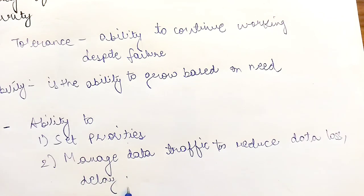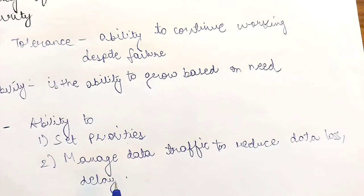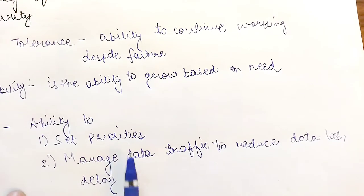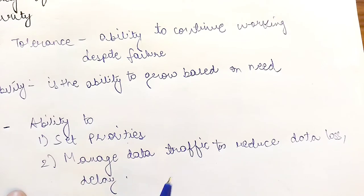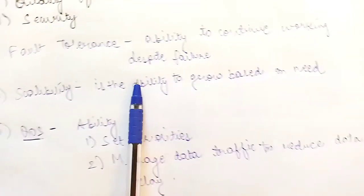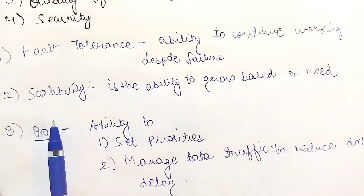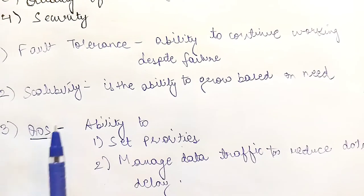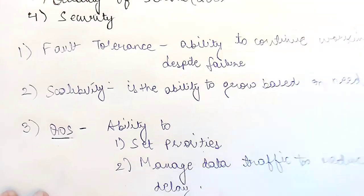Data must be sent within the time constraint and should not be delayed. If these two qualities — setting priorities and managing data traffic — are present in a network, you can say that the network has quality of service.